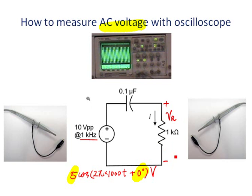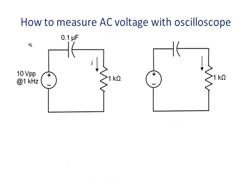First, let's try to calculate VR theoretically. For the sinusoidal steady-state voltage, we can use phasor domain to calculate the result. So let's convert the circuit into phasor domain. The supply is 10 volts peak-to-peak, so I can write 10 at 0 degrees.